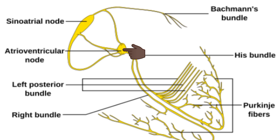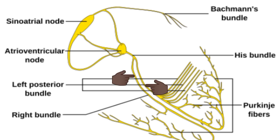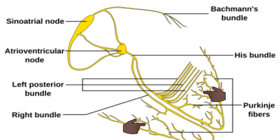From the AV node, the bundle of His arises. It divides into right and left branches which run on either side of the interventricular septum. From each branch of the bundle of His, many Purkinje fibers arise and spread all over the ventricular myocardium.